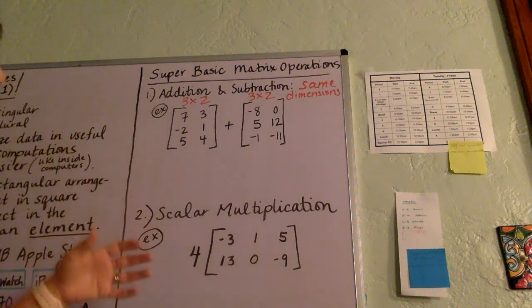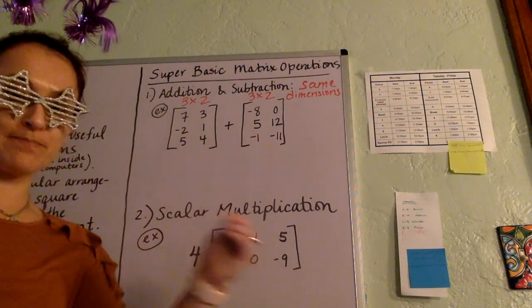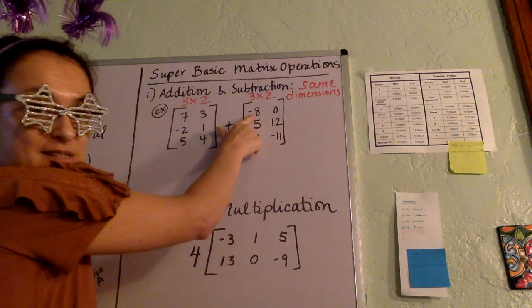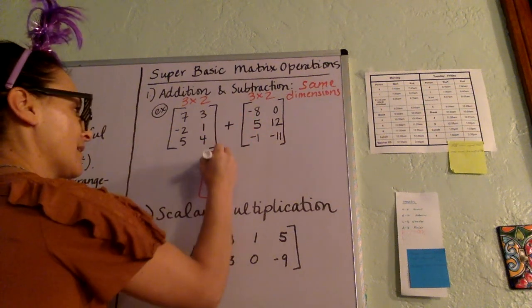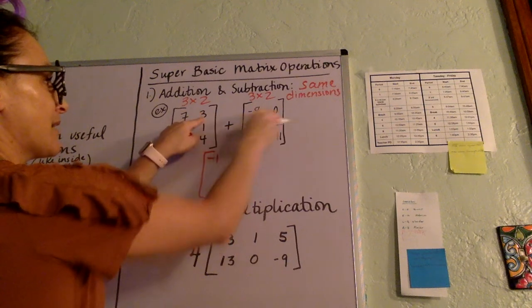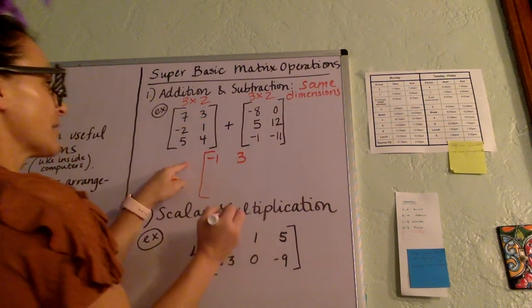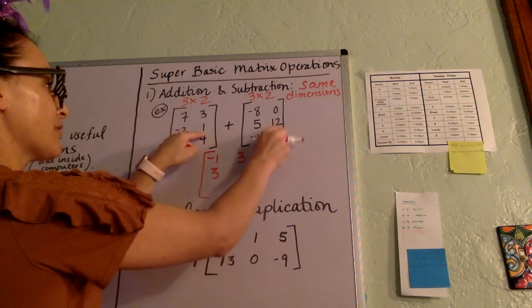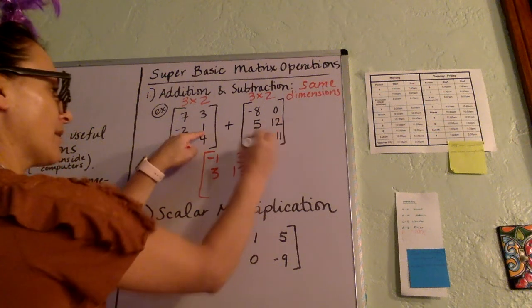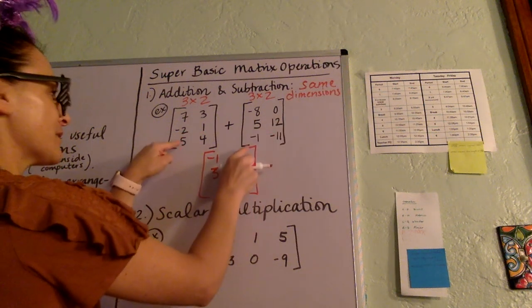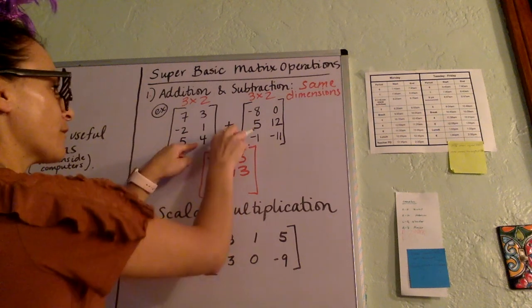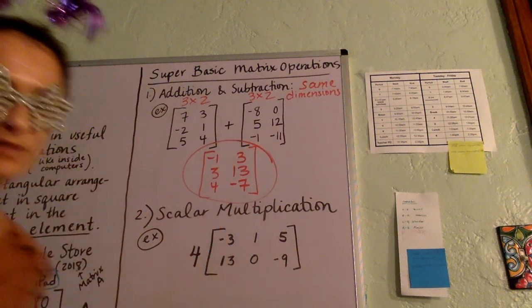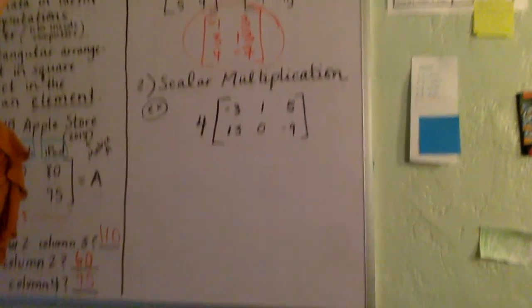But from here, it's very straightforward. You just add the corresponding elements. So like the seven is the top left, the negative eight is the top left. So let's add those. And then let's go with top right, three plus zero. So middle left, negative two plus five. And middle right, one plus 12. And then last one, lower left, five plus negative one. And four plus negative 11. And that's our answer. Pretty straightforward. They just have to match, be in corresponding spots.